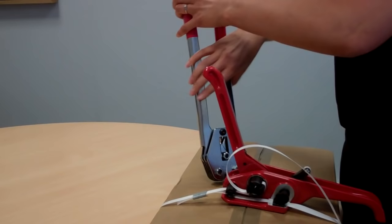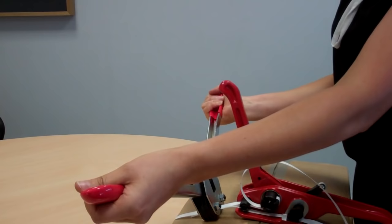Then take the sealer tool, completely open it up, and place it directly over the metal seal.